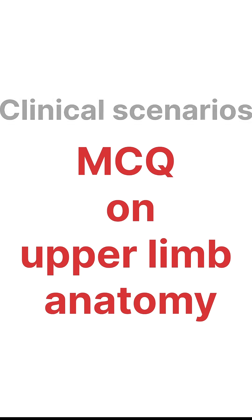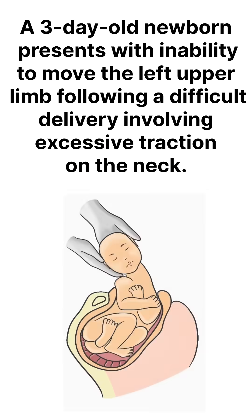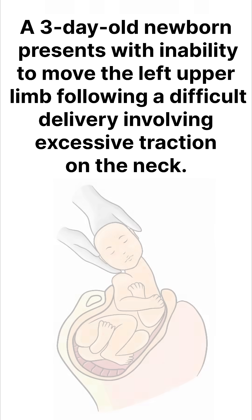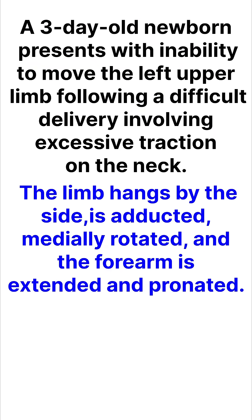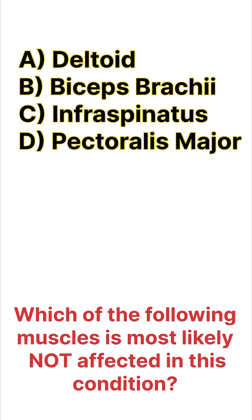Clinical scenario-based MCQ on upper limb anatomy: A 3-day-old newborn presents with inability to move the left upper limb following a difficult delivery involving excessive traction on the neck. The limb hangs by the side, is adducted, medially rotated, and the forearm is extended and pronated. Which of the following muscles is most likely not affected in this condition?